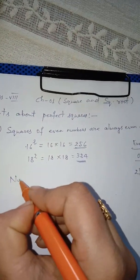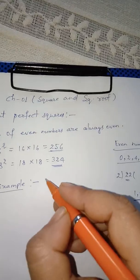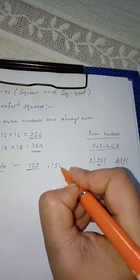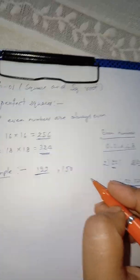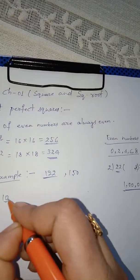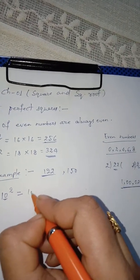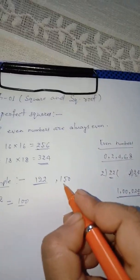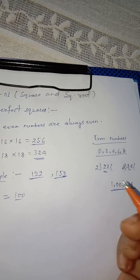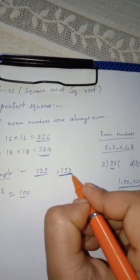Non-example: I have taken the number 150. A number which ends with 0, like 10 squared equals 100. Can we say that 150 is a perfect square? No, we cannot say that because 150 is not a perfect square.